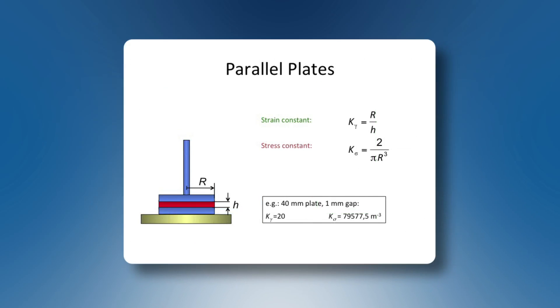For a parallel plate geometry, the strain constant is defined as r over h. r is the radius of the plate, and h is the gap, the distance between the upper and the lower plate. The stress constant is defined as 2 over pi and r to the power of 3.